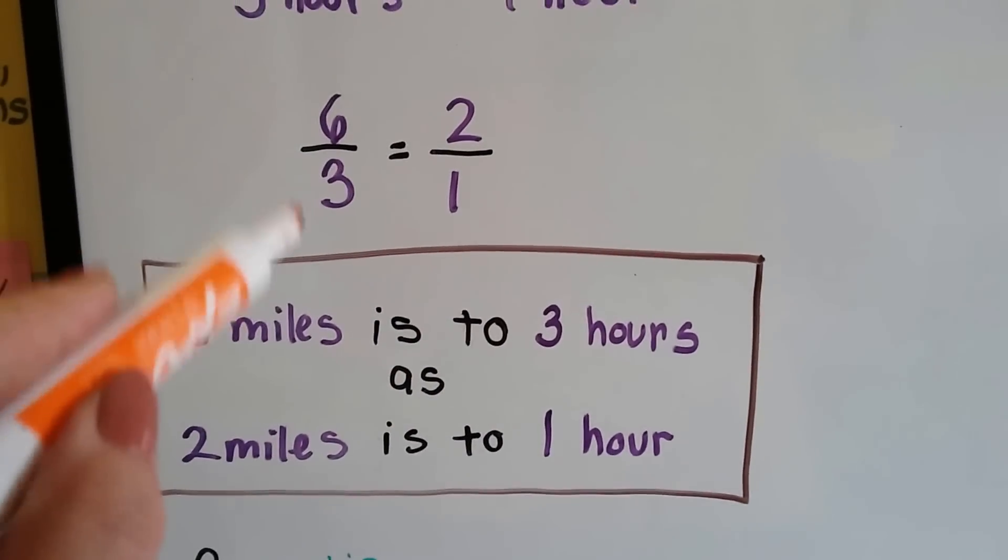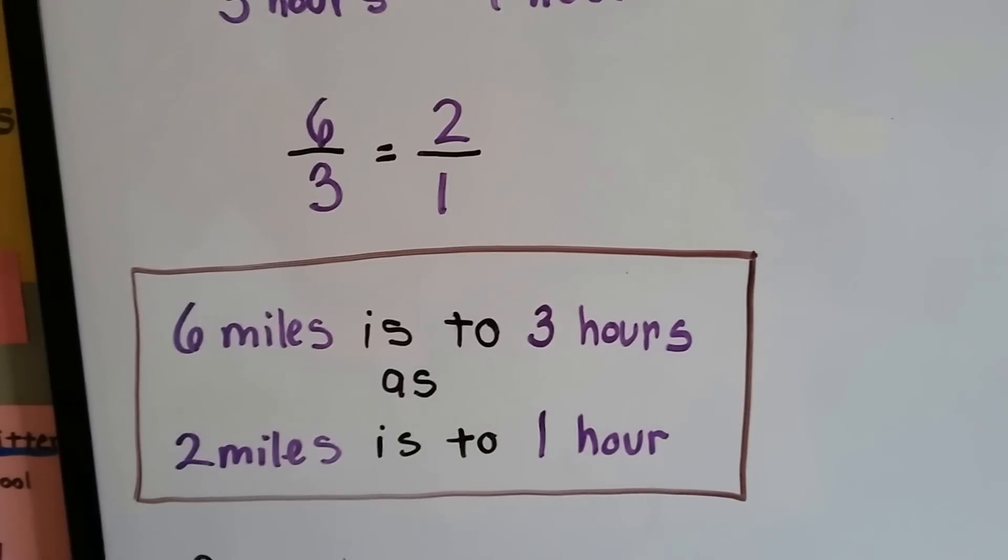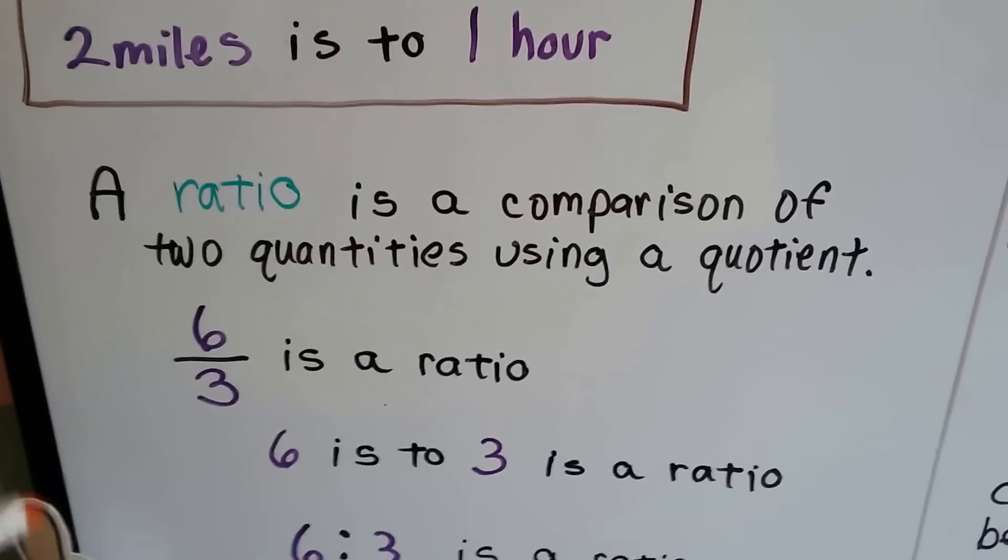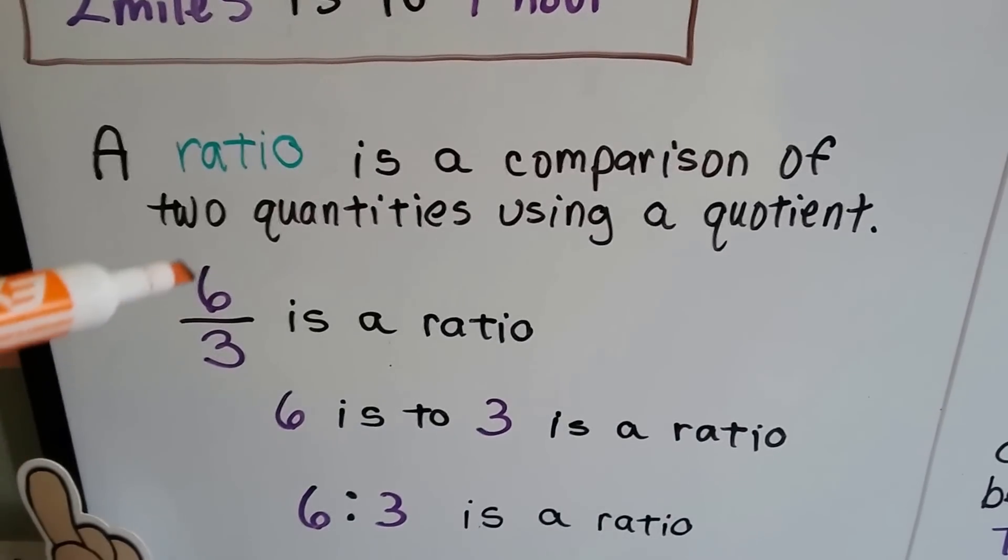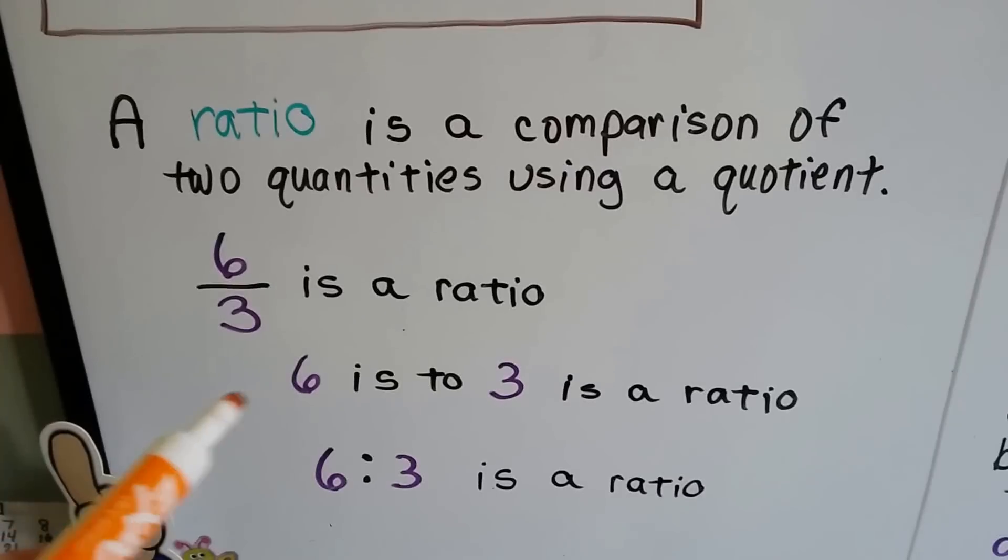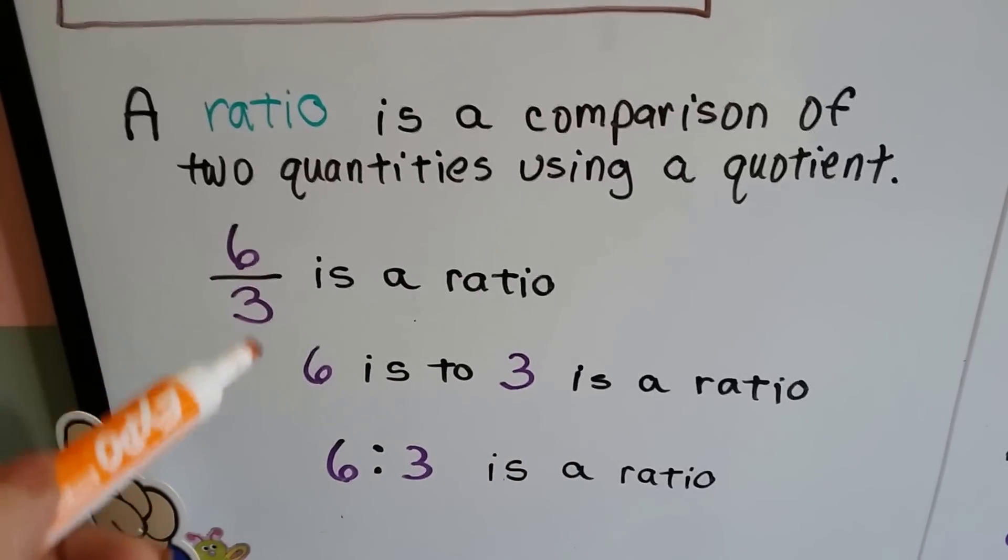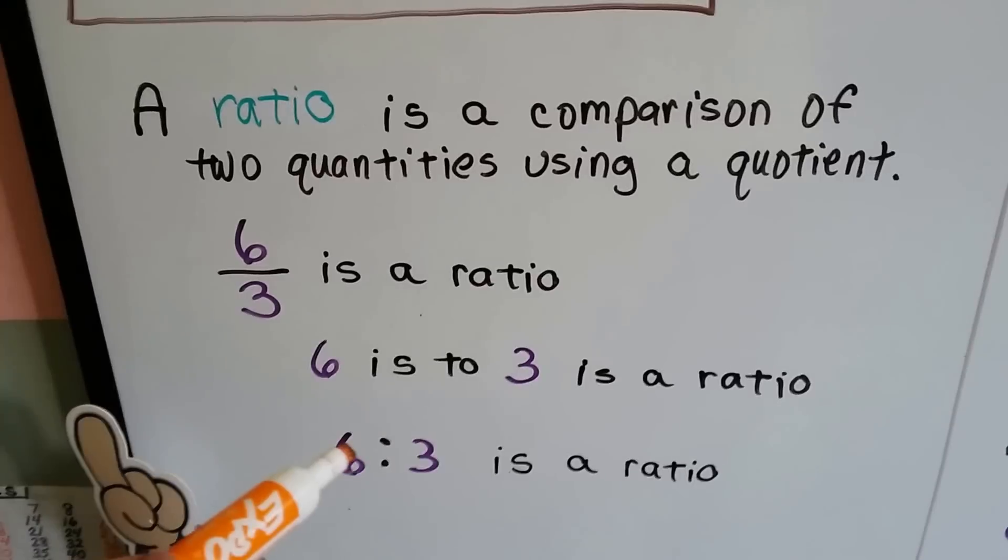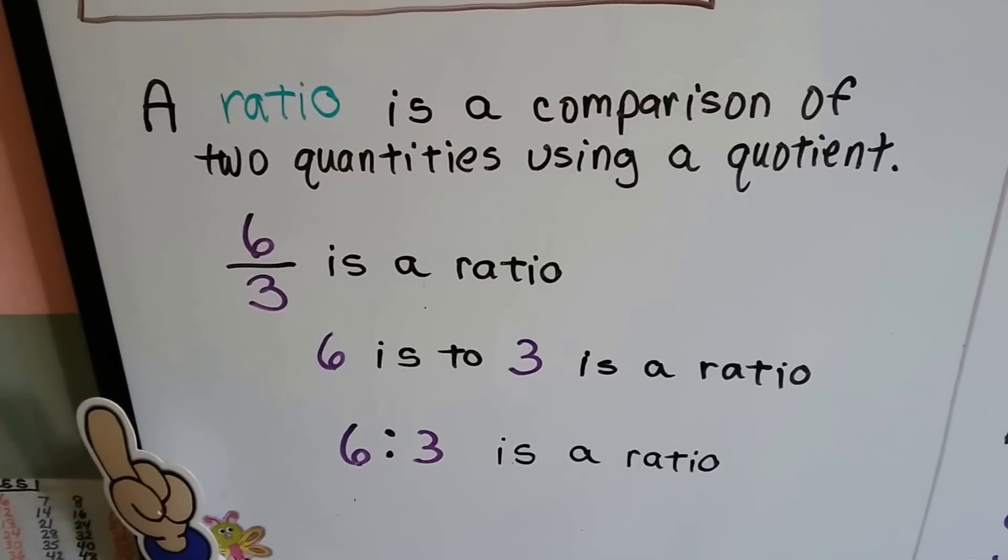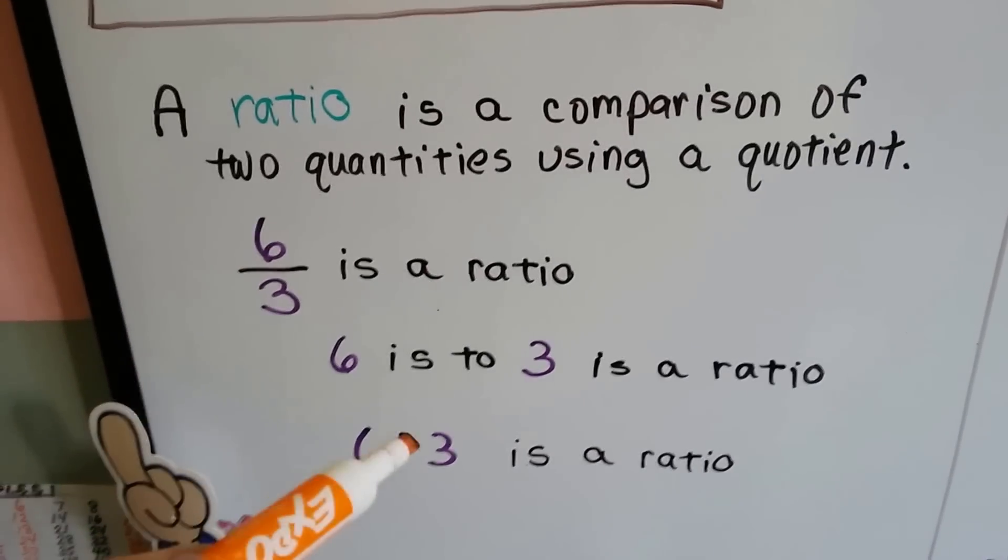6 miles is to 3 hours as 2 miles is to 1 hour. Those are ratios. A ratio is a comparison of two quantities using a quotient. 6 divided by 3 is 2, the quotient is 2. 6 is to 3 is a ratio, or you can write it as 6 colon 3. That's the same as saying 6 divided by 3.